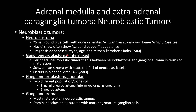Ganglioneuroblastoma includes intermixed and nodular subtypes. Intermixed is a peripheral neuroblastic tumor between neuroblastoma and ganglioneuroma in terms of maturation, with Schwannian stroma with scattered foci of neuroblastic cells. It occurs in older children relative to neuroblastoma patients, around 4 to 7 years of age. Ganglioneuroblastoma nodular type has two different populations: one is ganglioneuroblastoma intermixed or ganglioneuroma, and the second is neuroblastoma. Lastly, ganglioneuroma is the most mature of all neuroblastic tumors, with dominant Schwannian stroma with maturing or mature ganglion cells.